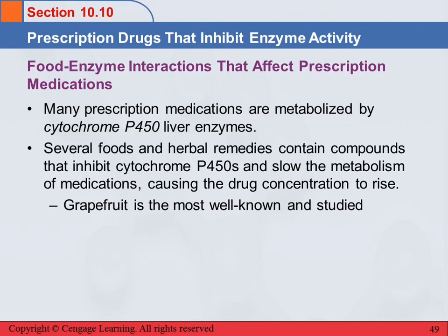There are also interactions between enzymes and foods, and some of these affect prescription medications — some of this has to do with how the medications themselves are metabolized. In your liver, cytochrome P450 enzymes metabolize a lot of these different medications. If you ingest a food or herbal remedy that inhibits the cytochrome P450 enzyme, your body will not metabolize the drug, and drug levels will rise because your doctor is giving you a dosage assuming your liver is metabolizing the drug at a certain rate. Grapefruit is the most well-known food that interacts with this.